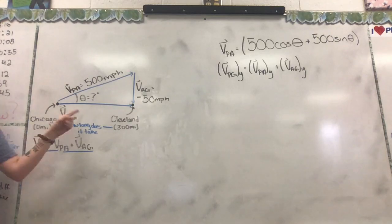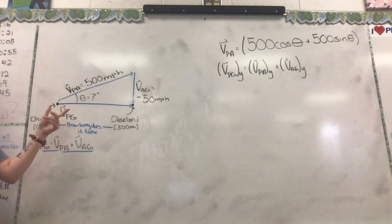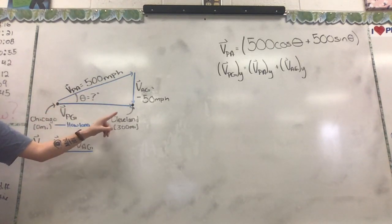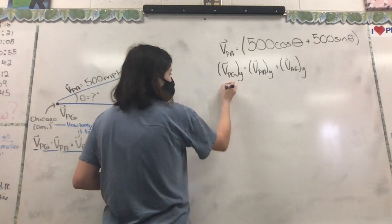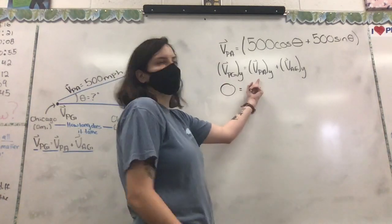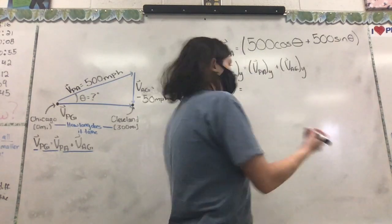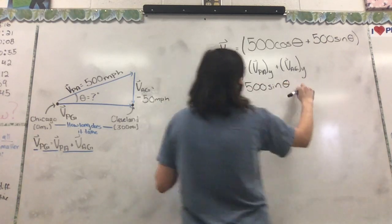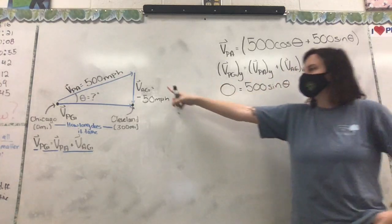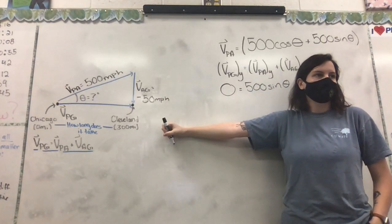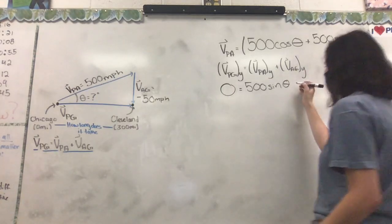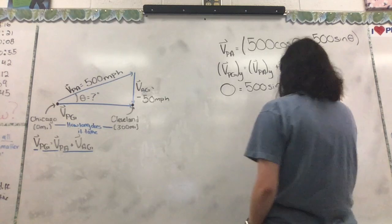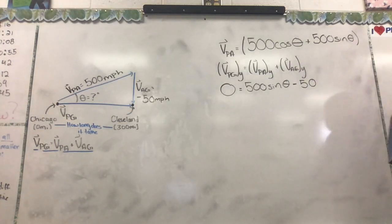So the Y with the plane and the ground, what is this vector's Y component? It's zero. Yeah, so we can put a big old zero there. We already found this, right? It's the 500 sine theta, so we can plug that in. And then the Y of the air with respect to the ground, what's its Y component? It's just negative 50. So we can go ahead and put minus 50. What that does for us is it makes it so we only have one unknown. And what is that one unknown? Theta.